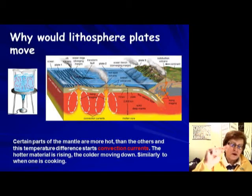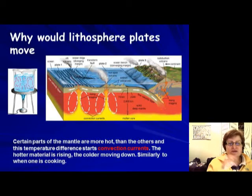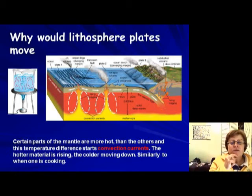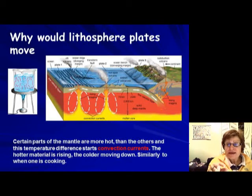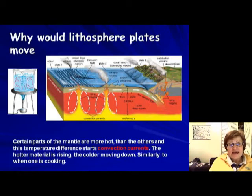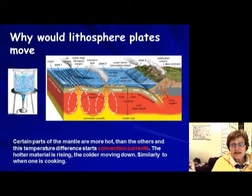If you remember, we talked about the big zones: the inner core, outer core, mantle, the asthenosphere, the uppermost mantle, and then the crust. In the mantle, because of the presence of radioactive elements — which we'll cover more in the minerals chapter — some elements are radioactive and they decay into a different element, releasing a lot of energy. This energy can be thought of as heat energy.